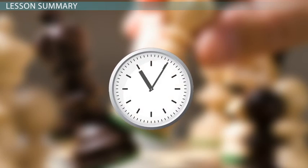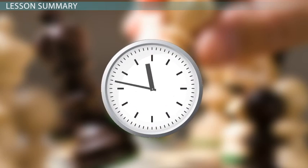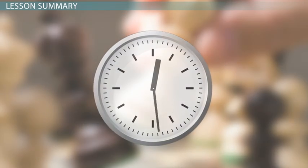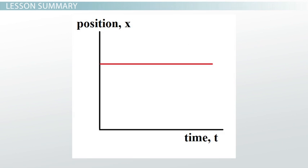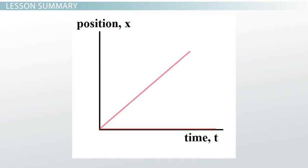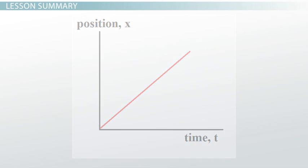When your position changes over time, you can show this using a position-time graph, with position on the y-axis and time on the x-axis. If you're not moving, you'll get a flat line. If you're moving at a constant speed, you'll get a diagonal line.